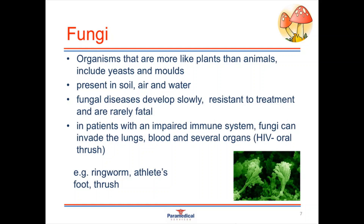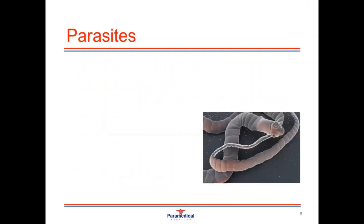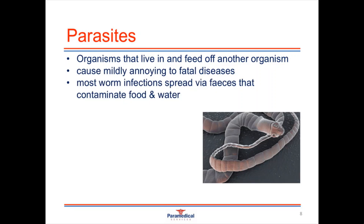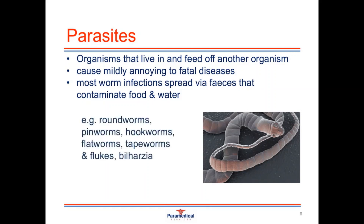Examples of fungi infections include ringworm, athlete's foot and thrush. The last type of pathogenic agent is parasites. Parasites need to live and feed off other organisms and don't survive independently for long. They can cause mildly annoying to very fatal diseases. Most worm infections are spread via faeces contaminating food and water sources, and are most commonly seen in developing countries with inadequate clean water and poor sanitation. Examples of parasites include roundworms, pinworms, hookworms, flatworms, tapeworms and flukes. While these can cause minor infections, severe cases such as bilharzia infections can be fatal without treatment.